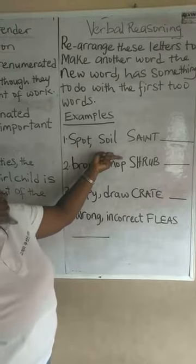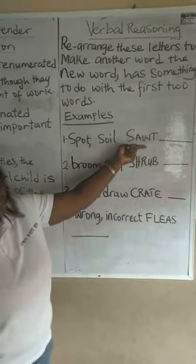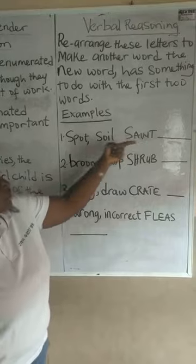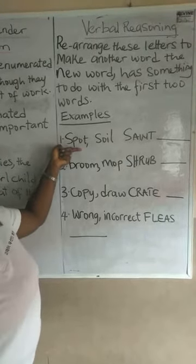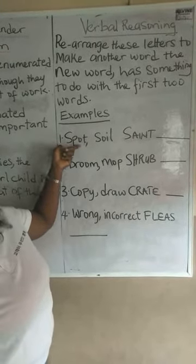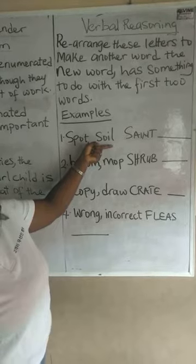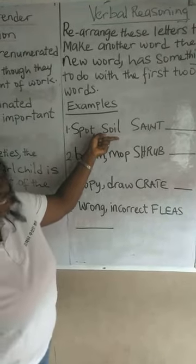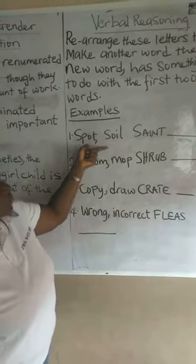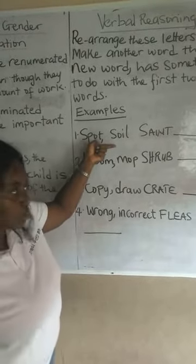You see these two words here: spot and soil. The word given to us in capital letters is SAINT. If you look at spot, when you have a spot on your clothes, it stains you. And when you soil your clothes, it also stains you.